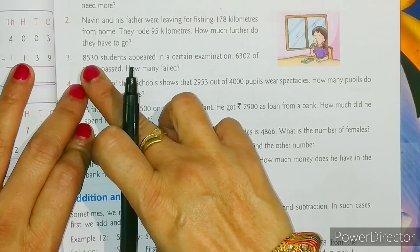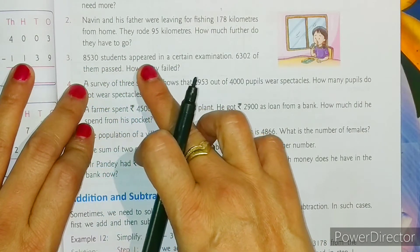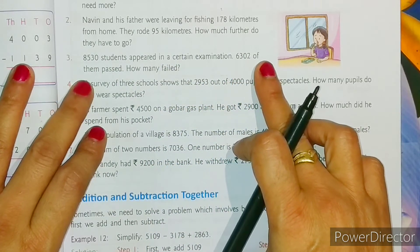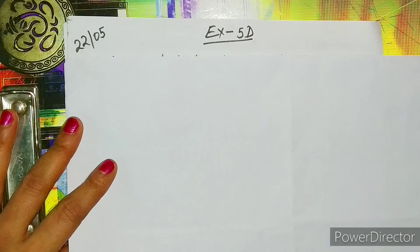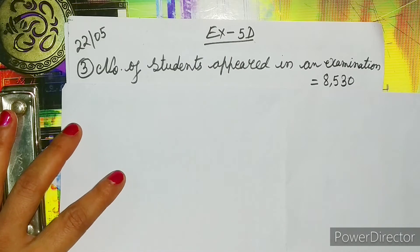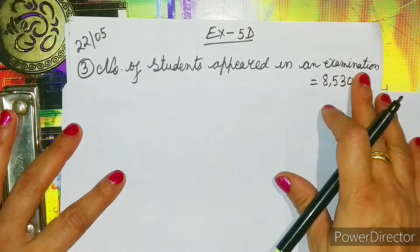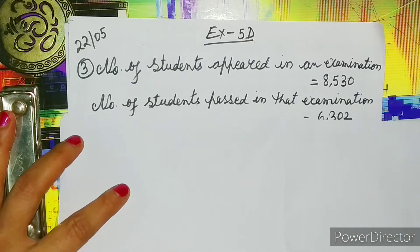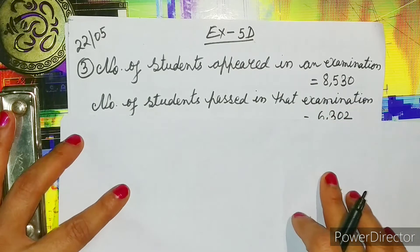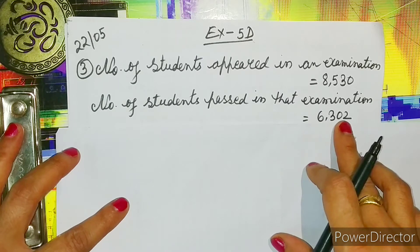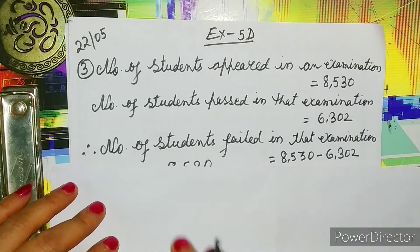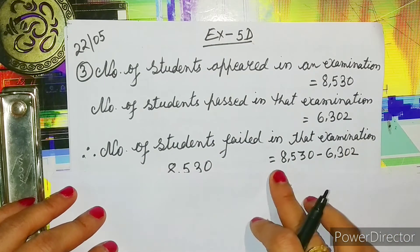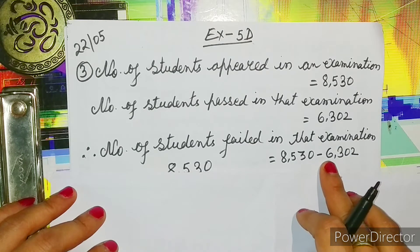Question number three says: 8530 students appeared in a certain examination. 6302 of them passed. How many failed? Let us solve question number three. The first statement is: number of students appeared in the examination is equal to 8530. The second statement is: number of students passed is equal to 6302. The third statement is: the number of students failed in the examination will be equal to 8530 minus 6302.